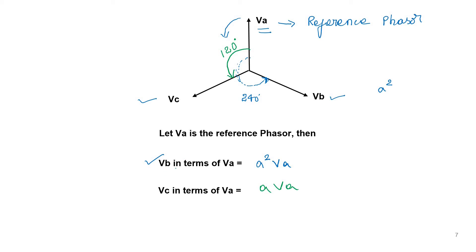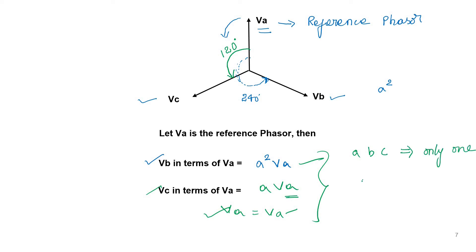So these three values: Va is the reference, so Va is represented as Va itself. Vb in terms of Va is A²·Va, and Vc in terms of Va is A·Va. That means all the equations which have A, B, C terms have been converted into only one phase — that is the reference phase. It can be A, B, or C. With regard to this, operator A plays a very important role in the analysis of unsymmetrical faults.